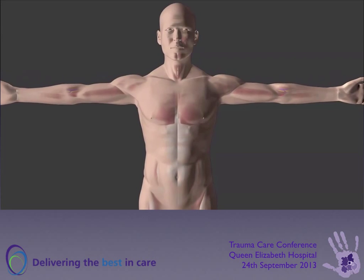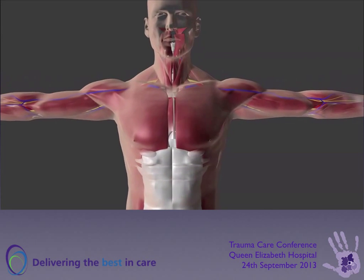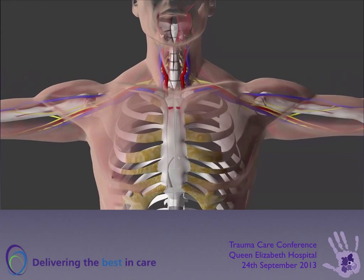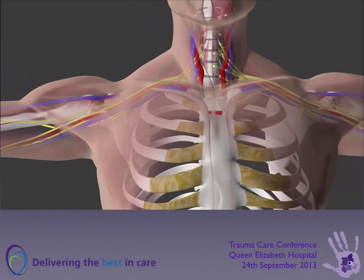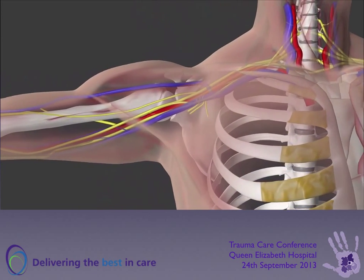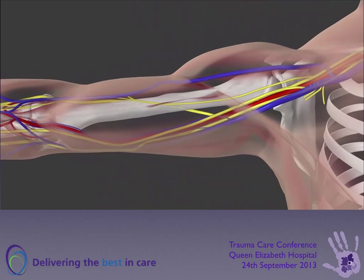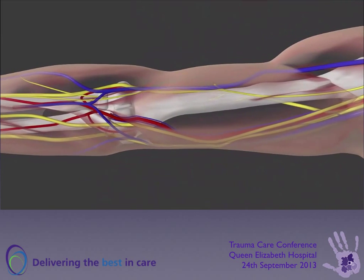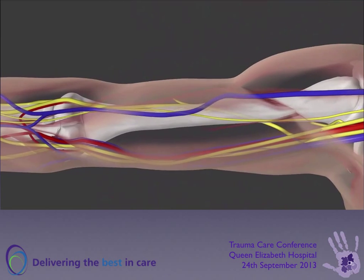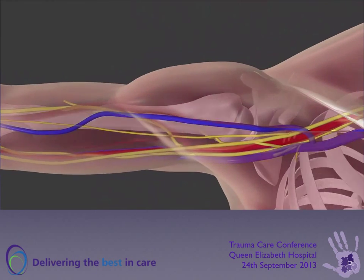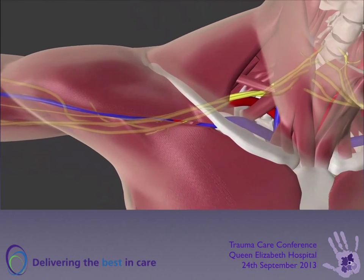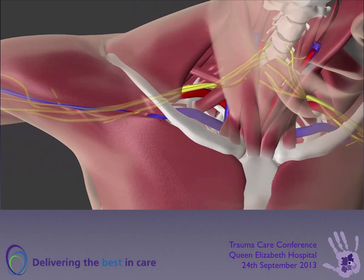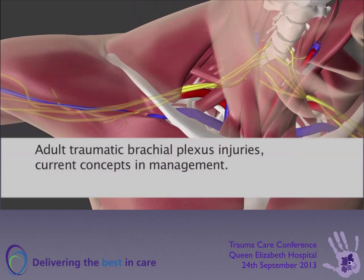The brachial plexus is a series of nerves extending from the cervical spinal cord — the C5 to T1 nerve roots — that then form a network of nerves in the posterior triangle, behind the clavicle, across the front of the shoulder, and into the arm. The terminal branches of the brachial plexus are the peripheral nerves supplying all of the muscles and the functions within the upper limb.